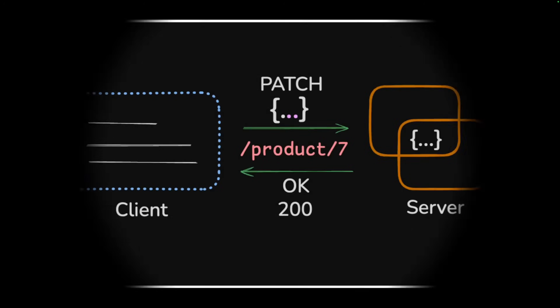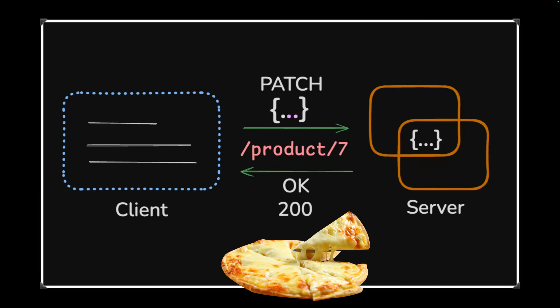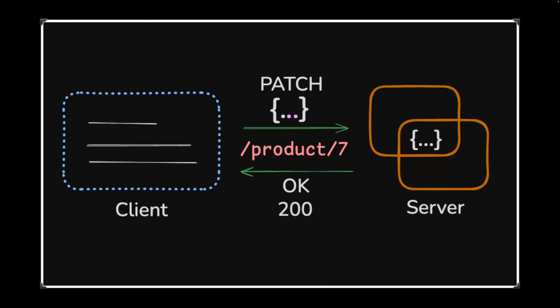There is often confusion between PUT and PATCH. PUT is for updating the entire resource; PATCH is for updating the resource partially. For example, you ordered a pizza and now you just want to add extra cheese — you're not replacing the pizza order, just modifying it a little. That's where you use PATCH. Just like PUT, you identify the resource using an ID (e.g., /product/7) and then update just a particular attribute of it using PATCH.